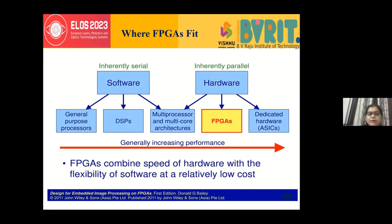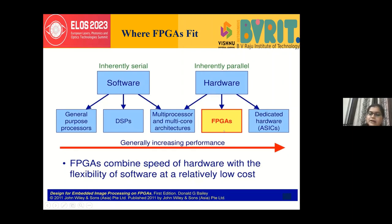Compared to software, which is inherently serial — processing one step at a time and increasing time complexity — hardware performs parallel processing, allowing multiple modules to work simultaneously. FPGAs are therefore very suitable for improving performance. FPGAs combine the speed of hardware with the flexibility of software at a relatively low cost, which is why we are integrating image processing with FPGAs.